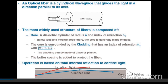The optical fiber works as a cylindrical waveguide that guides light in a direction parallel to its axis. The fiber consists of three cylinders: the core, the cladding, and a buffer coating. The core is a dielectric cylinder of radius a and refractive index n1. The core is surrounded by the cladding that has refractive index n2, with the condition that n2 must be less than n1. The operation is based on total internal reflection to confine the light.